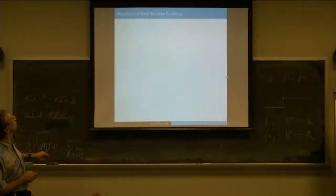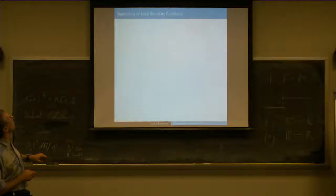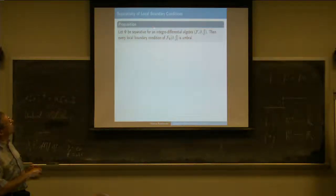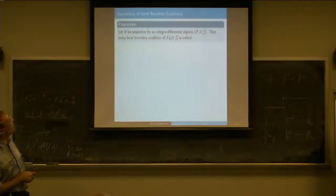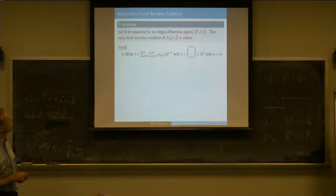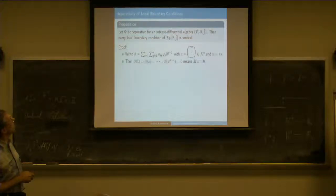That's maybe not going to completeness here. As I said before, the local boundary conditions are completely harmless. They are always umbral in the sense that I defined umbrality.